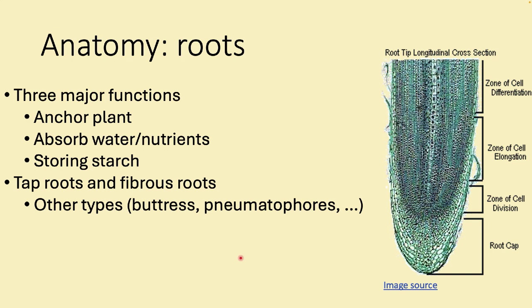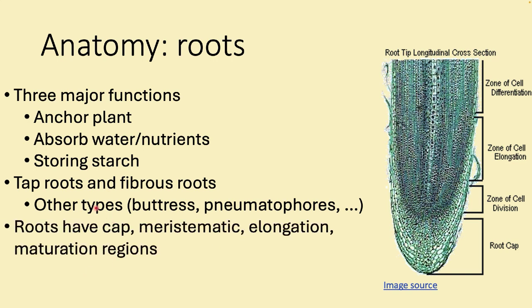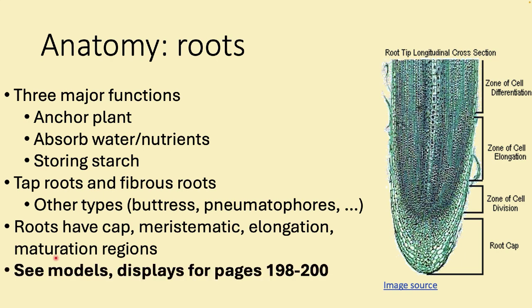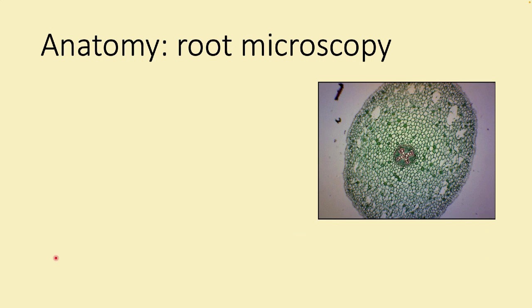All roots have a similar structure. Using an allium (onion) root tip as an example: there's a root cap at the tip to push through soil. Behind that is the division area of meristematic tissue where cells divide, then an elongation zone where cells stretch out, and finally a differentiation or maturation zone where cells become specialized types.